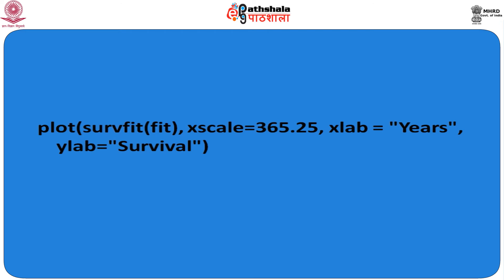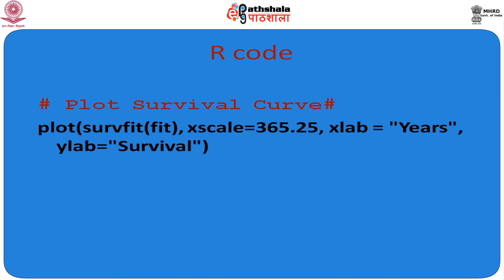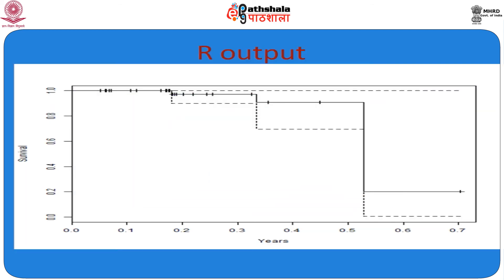Now we go to the next slide to plot the survival fit. Using plot(survfit) with the Cox PH model, the x-scale is set to 365 days, with x-label 'years' and y-label 'survival'. This converts follow-up days into years. The survival probability with confidence intervals is shown — dashed lines represent the upper and lower confidence intervals, and the broader solid line shows the point estimates of survival.